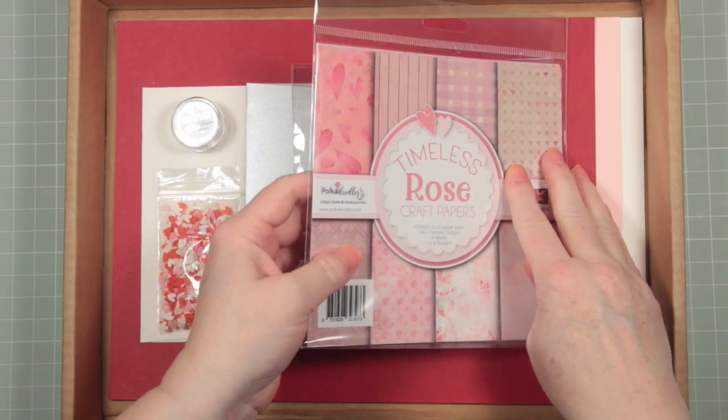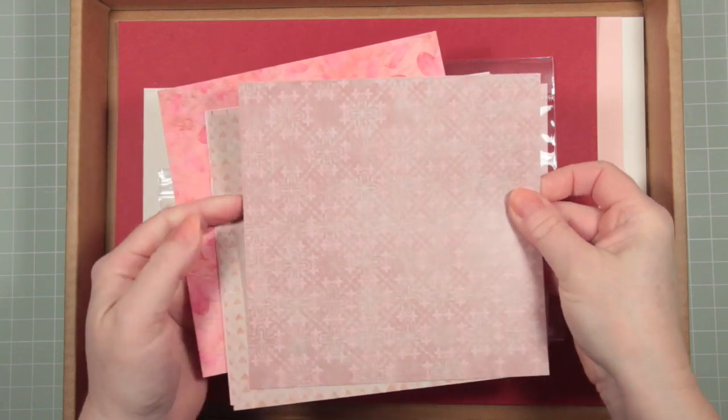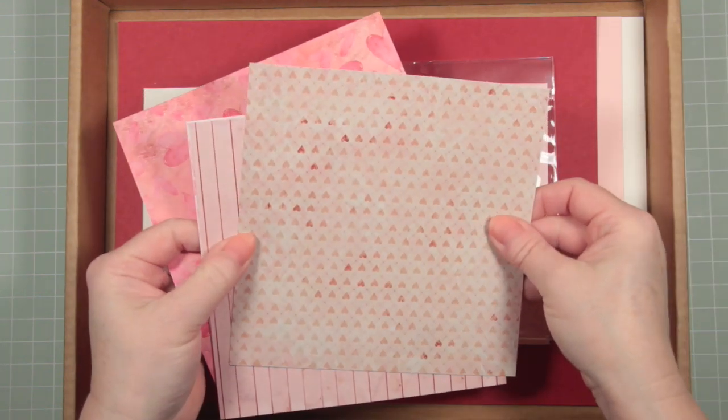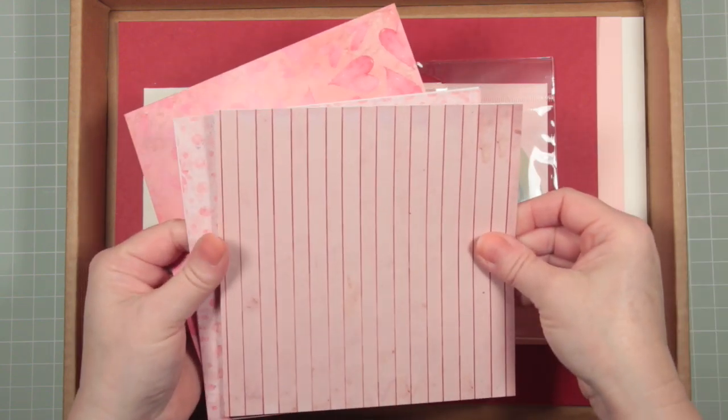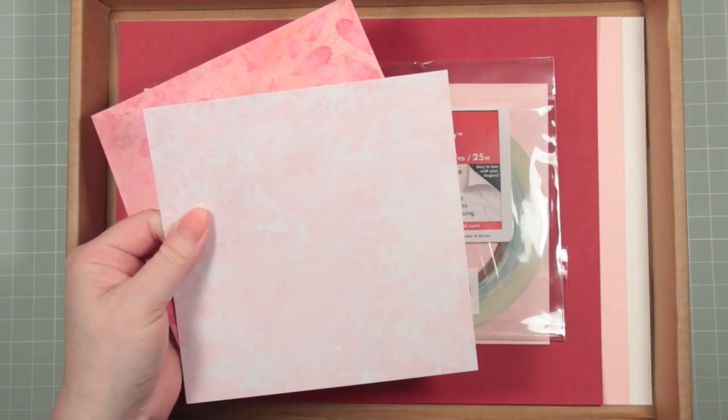The paper pack is called Timeless Rose and it comes from Polkadoodles. It's a 6x6 paper pack which has eight single-sided sheets. These are really pretty designs and they have a slight coating to them, not completely matte, just a very slight sheen to them.